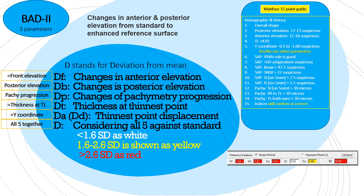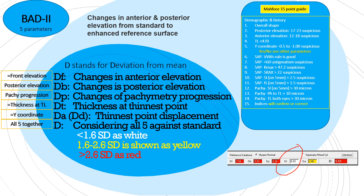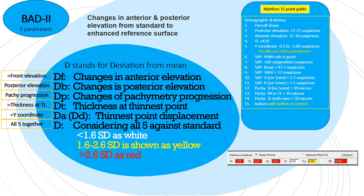In this example, DF (front elevation), DB (back elevation), and DP (pachymetric progression) are all in red — highly suggestive of keratoconus. DT, which is the thinnest location, is in white, meaning the cornea is not thin. DA — the displacement of the thinnest location — is almost normal. But the total D is in red, so overall this cornea is most probably abnormal.